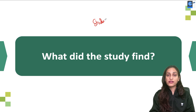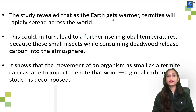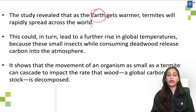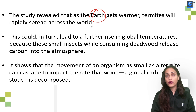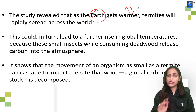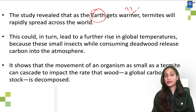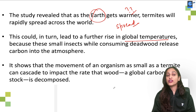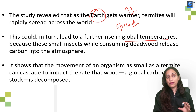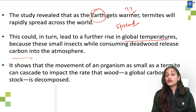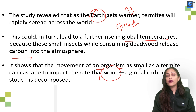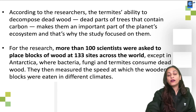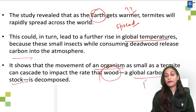They also feed on drywall, particle board, and plywood that has not been pressure-treated. So the particular study says that global warming — the earth is getting warmer — and because termites survive easily in warm temperatures, they are spreading across the world. These small insects release carbon into the atmosphere, so the impact on global carbon stock is significant.